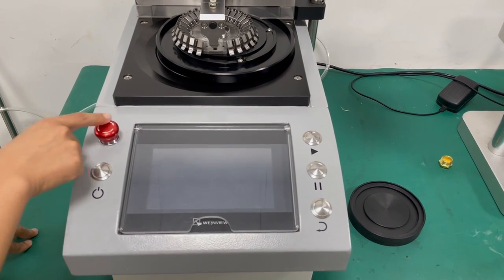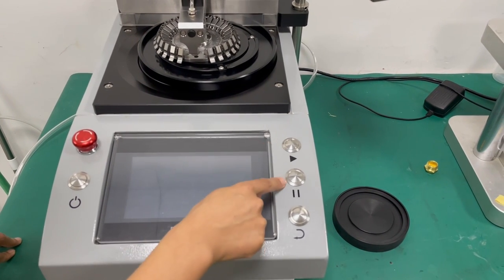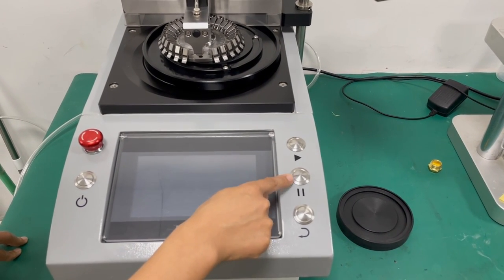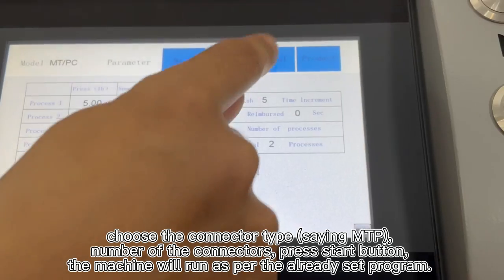Here, this is the stop, emergency stop button. This is the on button. This is start. This is for stop, and this is for back. Now I will press this.